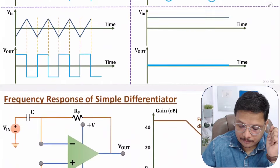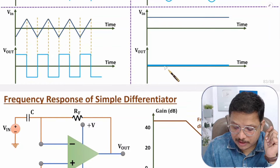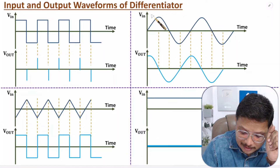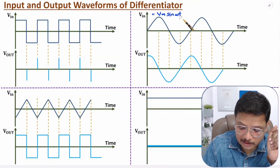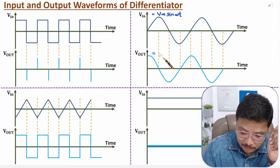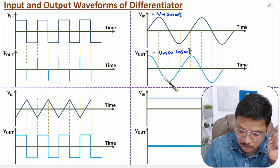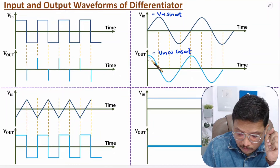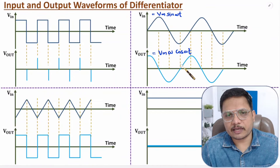If the input is a constant, differentiating a constant with respect to time gives zero voltage at the output. If the input is a sine wave, V-in equals Vm · sin(ωt). Differentiating with respect to time gives Vm · ω · cos(ωt). So the output is Vm · ω · cos(ωt). Since sine starts from zero and cosine starts from Vm, the output waveform is a cosine. That is how differentiation happens with different input signals.